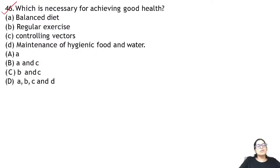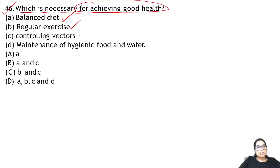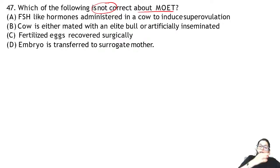Question 46: which is necessary for achieving good health? Balanced diet, daily exercise, vector control, and hygienic food and water — all are necessary. Answer is D.